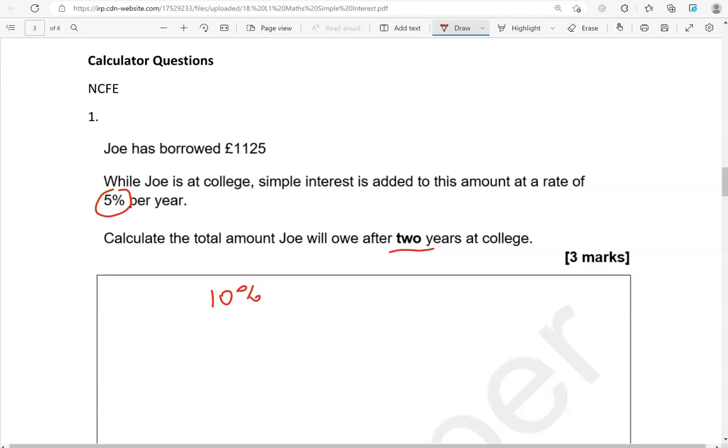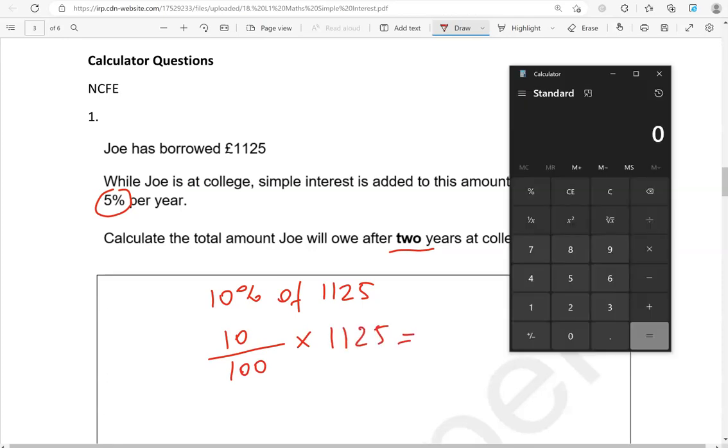So that would be the shorter way. Of course, if you want, you can work out 5% and then 5%, which is absolutely fine. But it's simple interest, so it doesn't really matter. So you can add the two percentages. That's 10% of 1,125 that we're working out. 10% means 10 out of 100 of 1,125. So with a calculator, I can do 10 divided by 100 times 1,125 gives us 112.5.